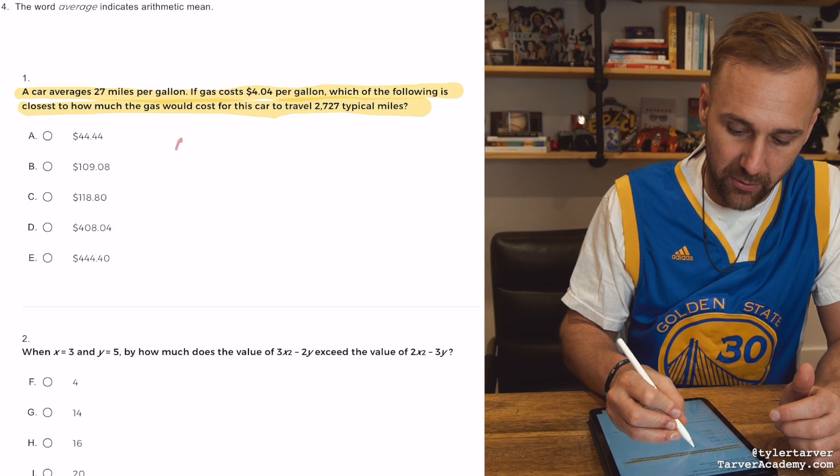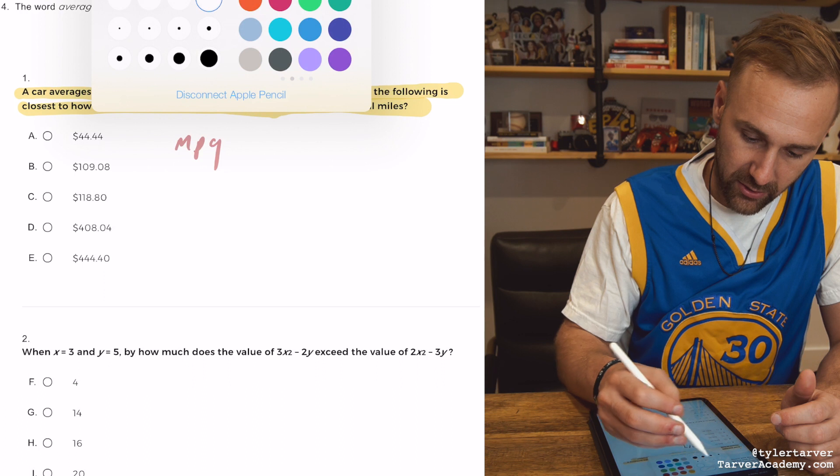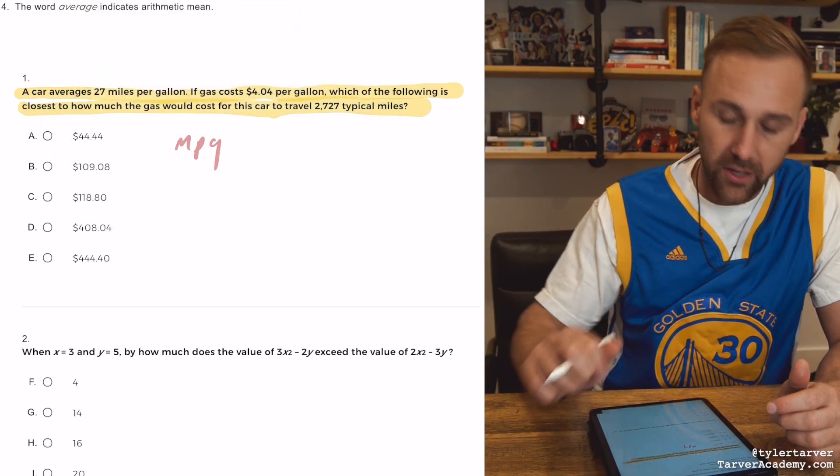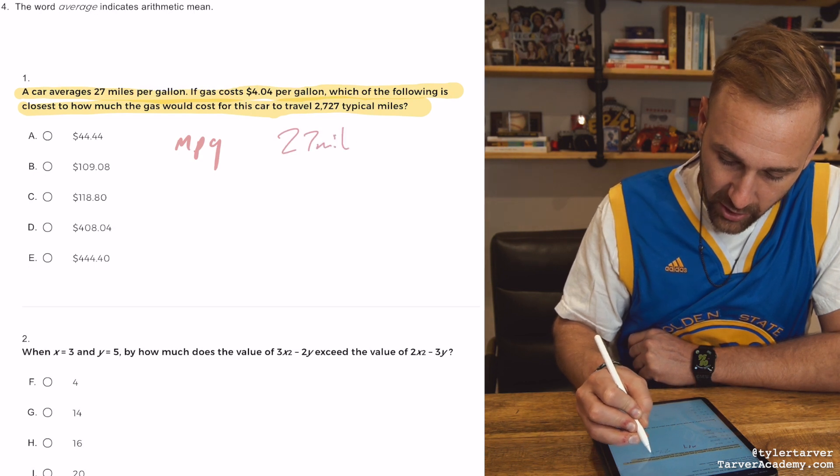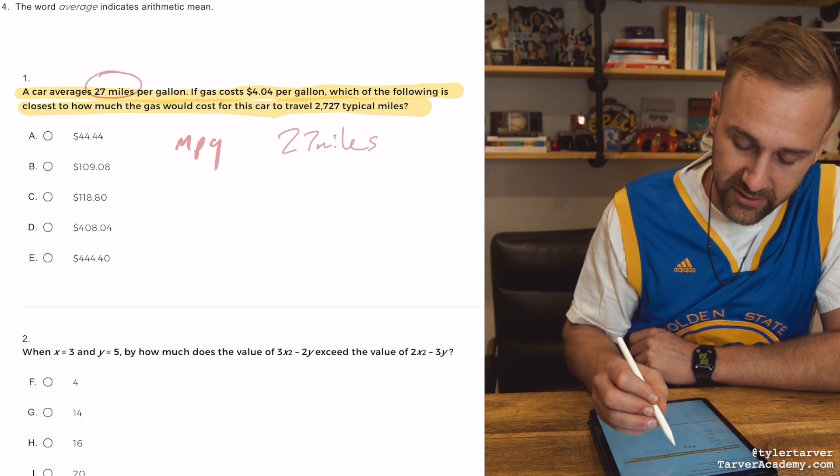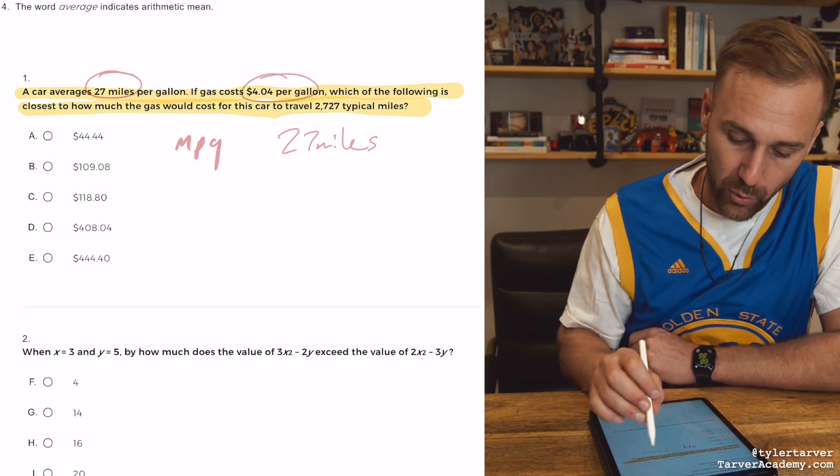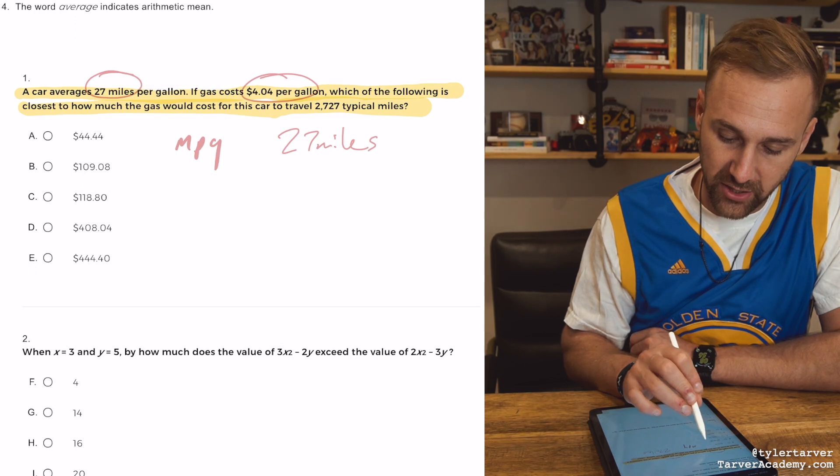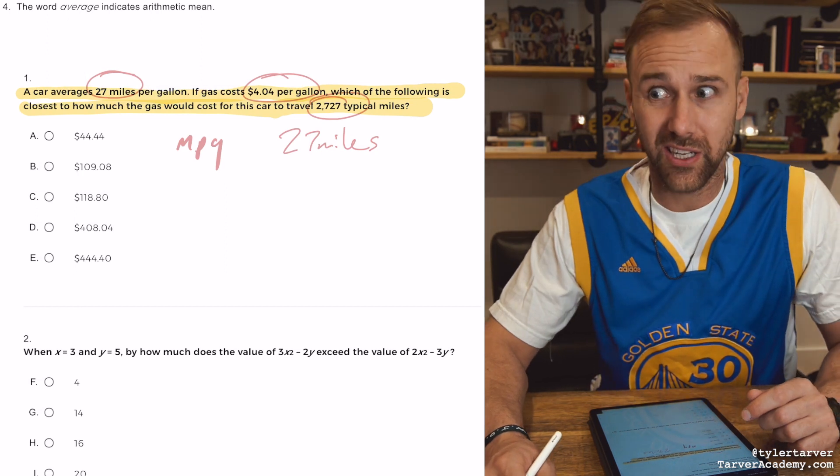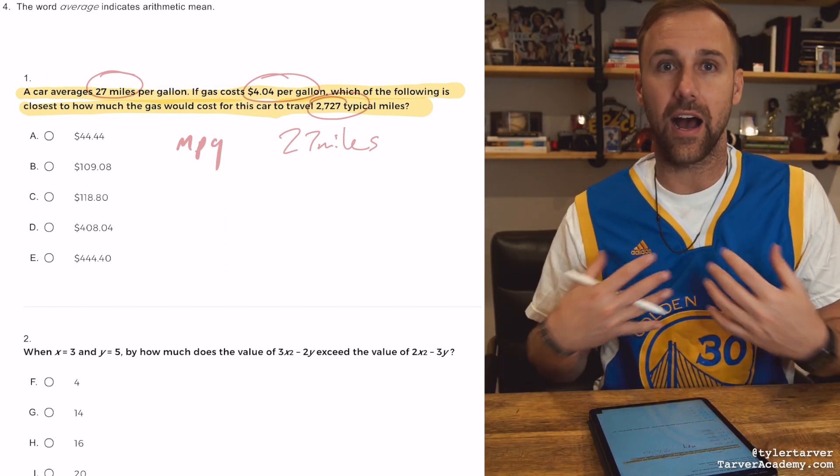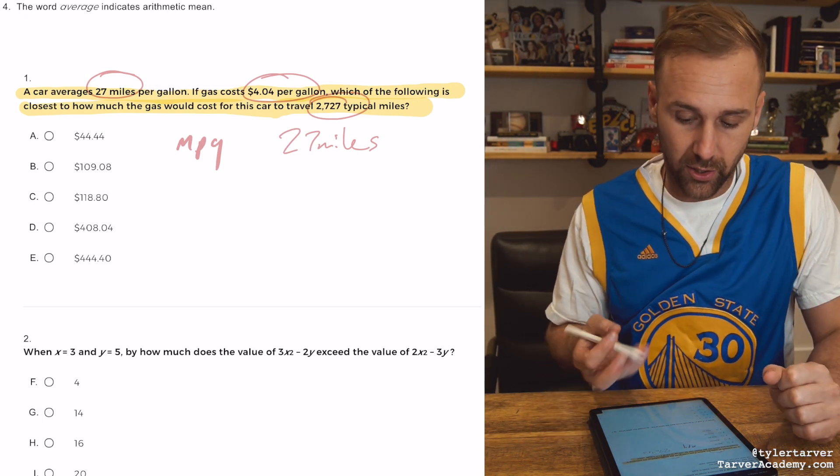So here's what you got to remember. You're talking about miles per gallon. We want to go 27 miles. You can write it out or you can just circle it. 27 miles, gas costs $4.04 a gallon. That's important. Which of the following is closest to how much the gas would cost for that many miles? Okay, so there's a couple ways to do this. I'm going to do it in the way that I think is easiest for you guys to work on your own.